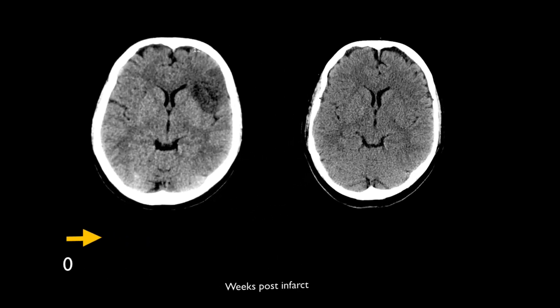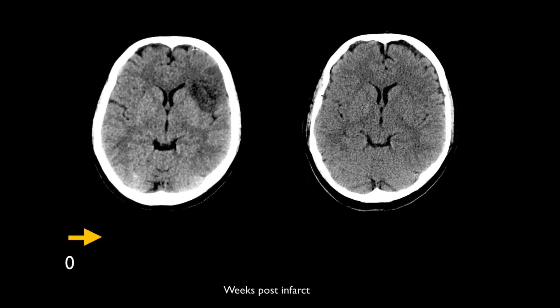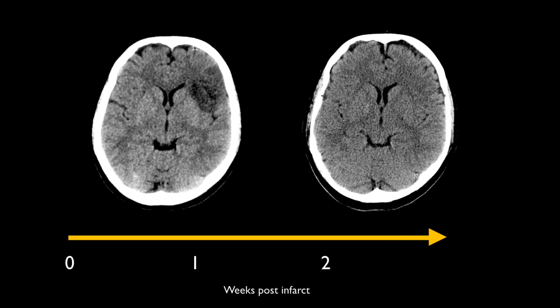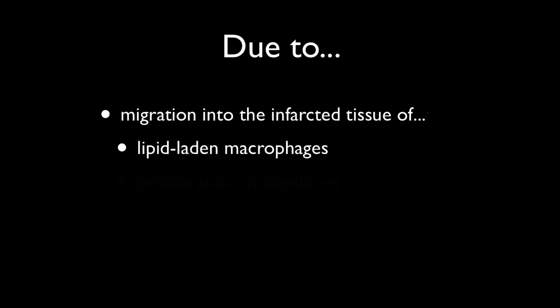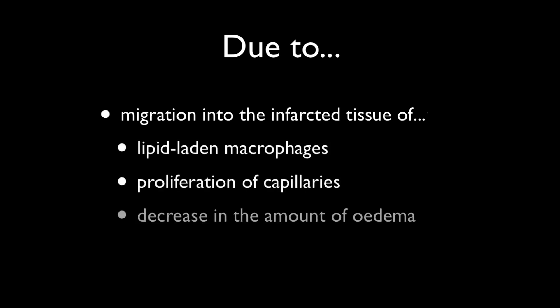Classically, CT fogging is seen during the second and third week following an infarct. A number of processes have been implicated, including migration into the infarcted tissues of lipid-laden macrophages, proliferation of capillaries, a decrease in the overall amount of edema, and cortical laminonecrosis.